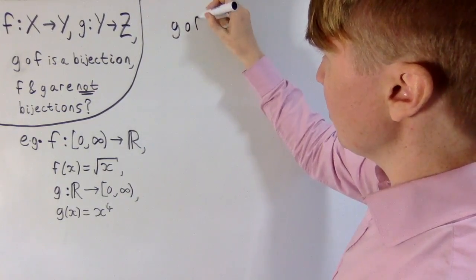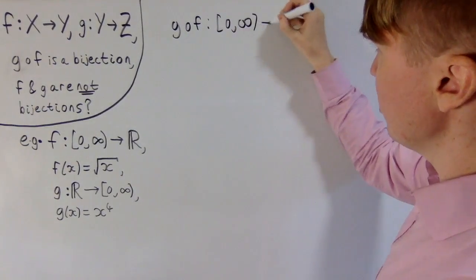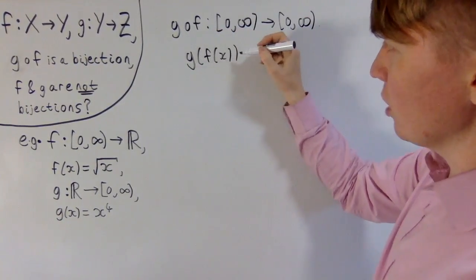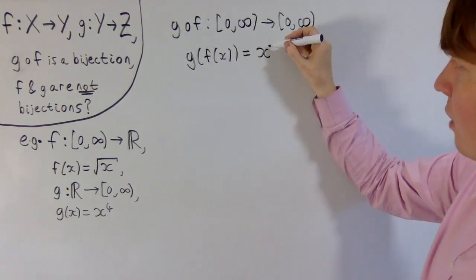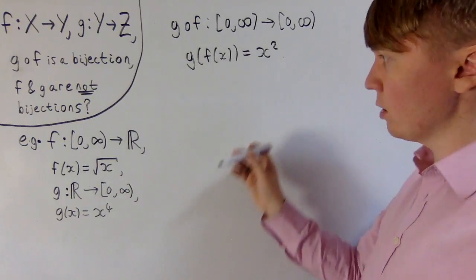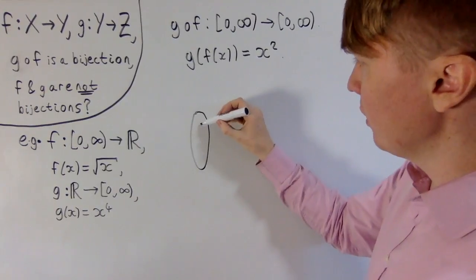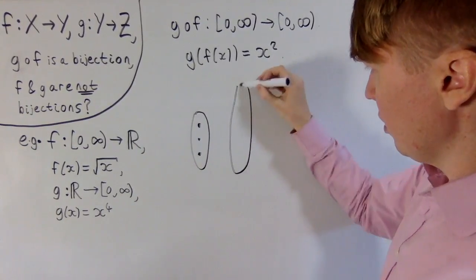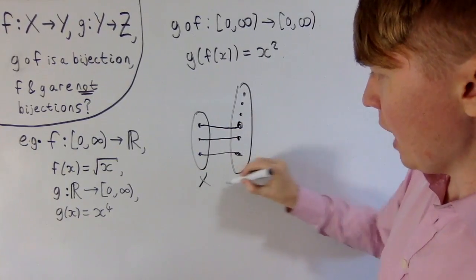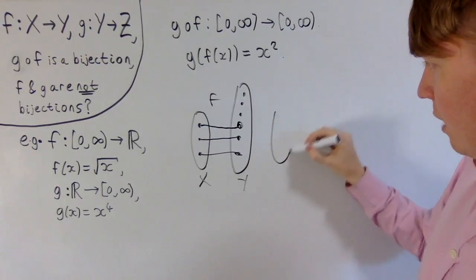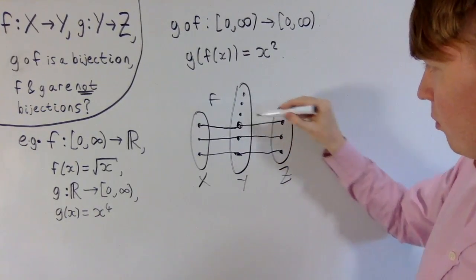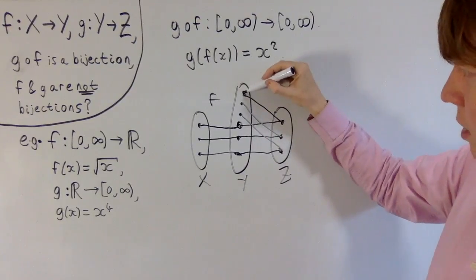Neither f nor g are bijections. But when you do the composition — g∘f — this goes from the non-negative reals to the non-negative reals, and g of f of x equals x squared. You can check against the definition that this is one-to-one and onto. So once again, we've got a bijection, but f and g themselves aren't bijections. We're starting to see a bit of a pattern here: f is a one-to-one function, it's just that it doesn't fill up its codomain. And g is onto — it does fill up the new set Z — however it's not one-to-one because multiple elements in Y map to the same element in Z.